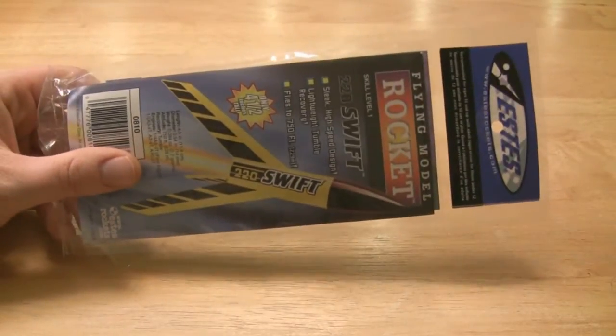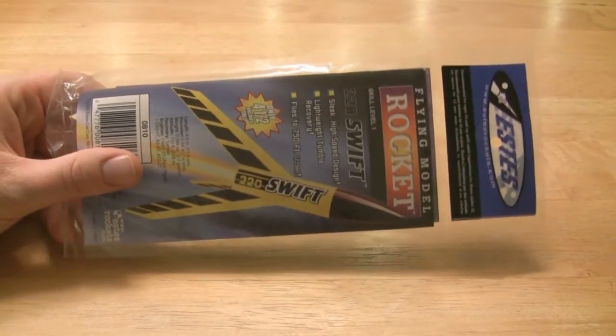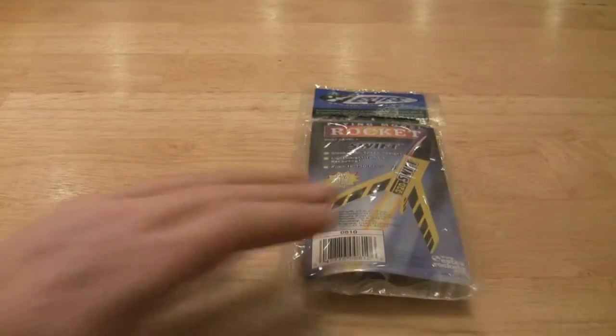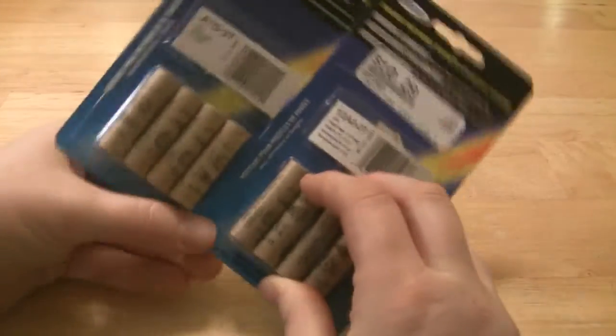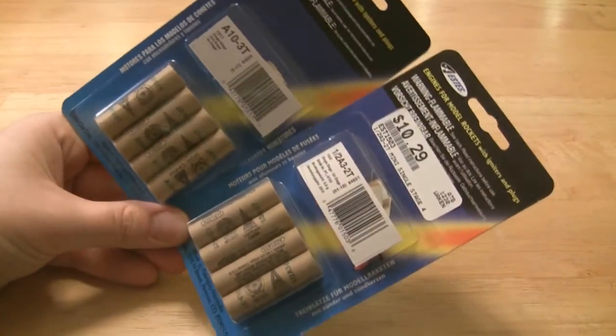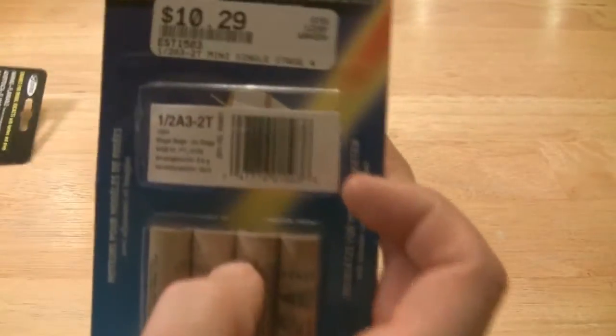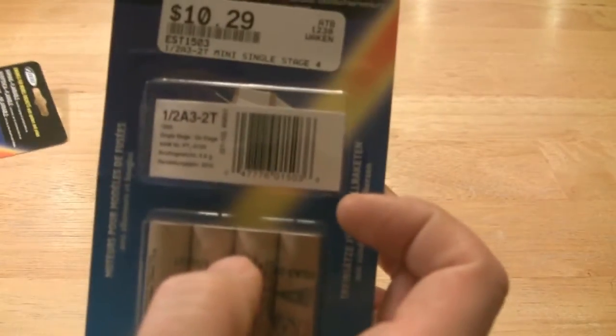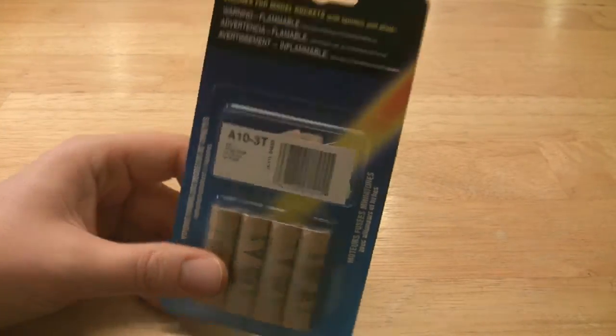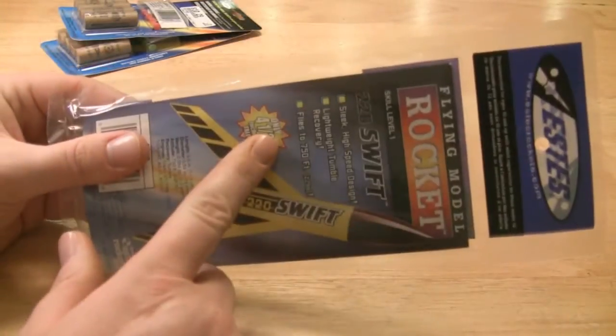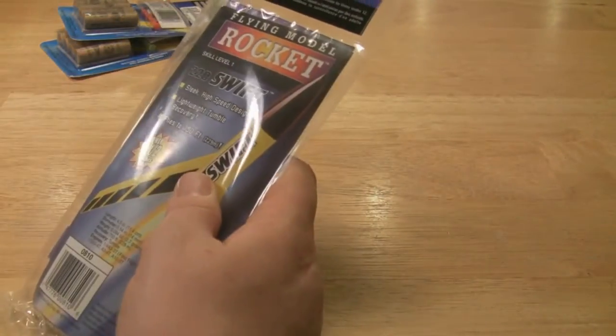Okay, what we have today is an Estes 220 Swift model rocket sized for mini engines. When I got into building rockets years ago, we didn't have mini engines. This is a half A. This is for the test flight and this is an A10-3. It says 750 feet on the package. That's pretty darn good for a small rocket.